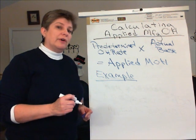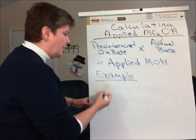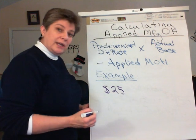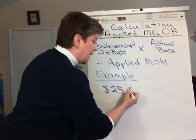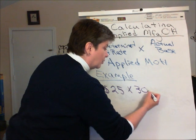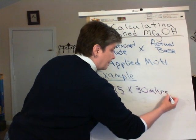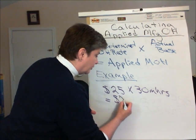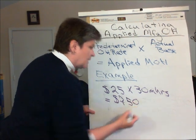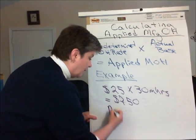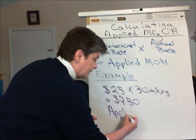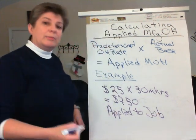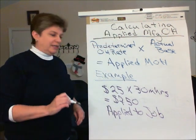So to calculate the amount of overhead applied to that particular job, we simply take that $25 rate per machine hour and multiply it times those 30 machine hours. That is going to yield a total of $750 that is applied to the job's work in process account and to the job cost sheet for that particular job.